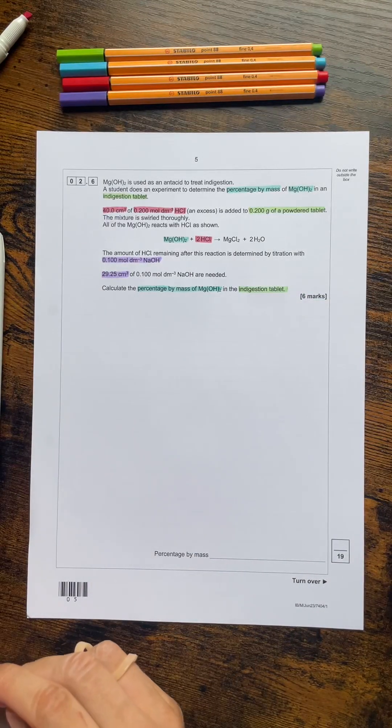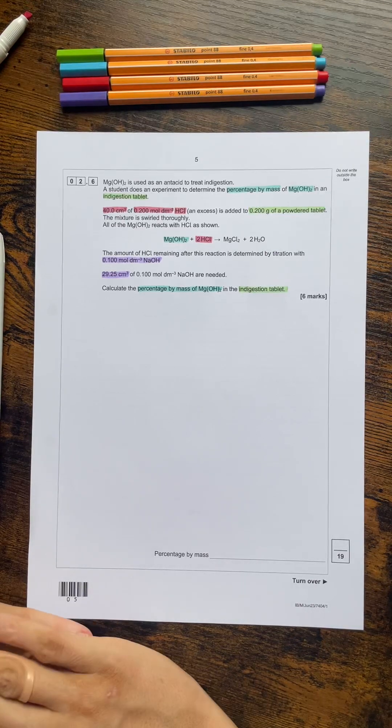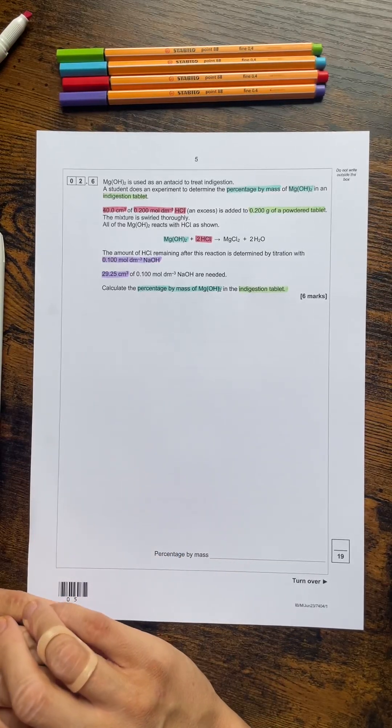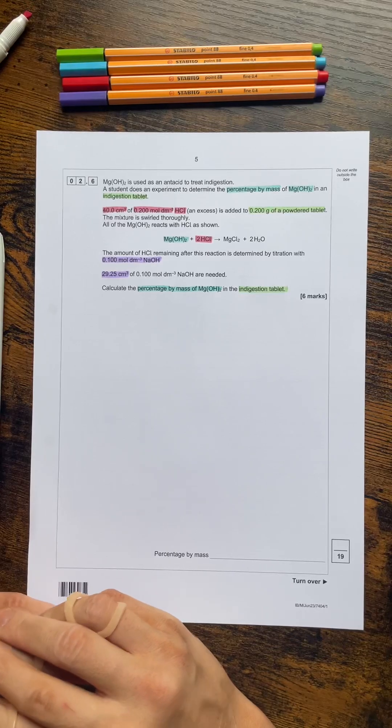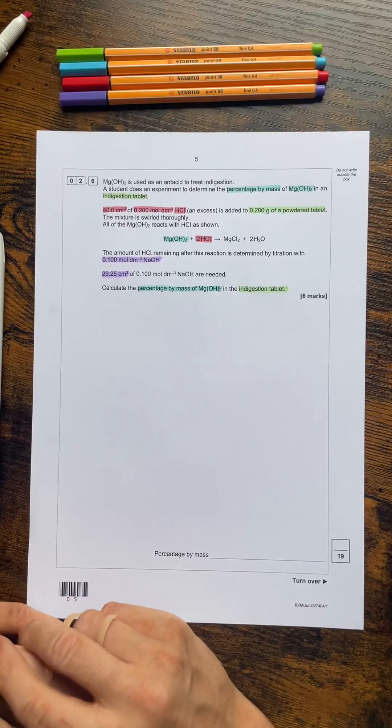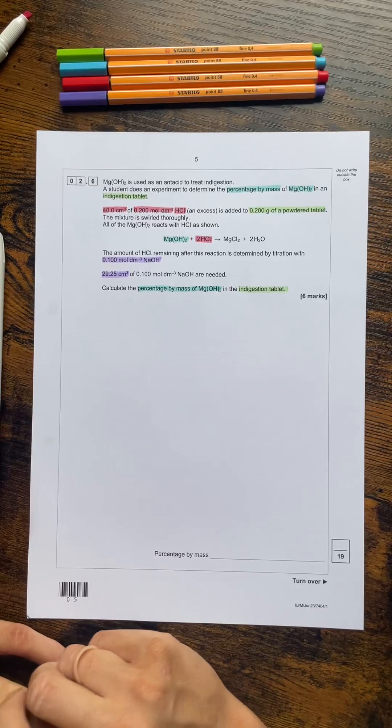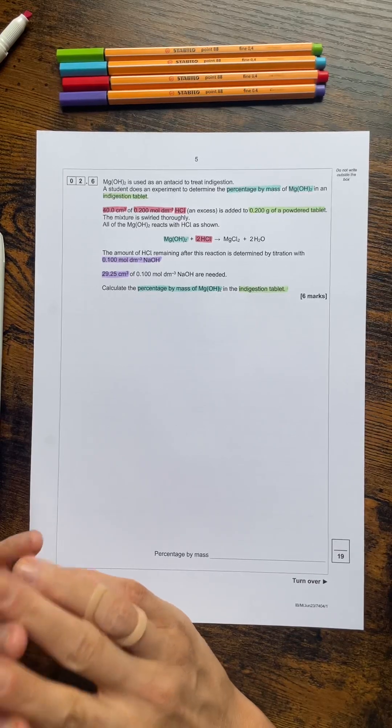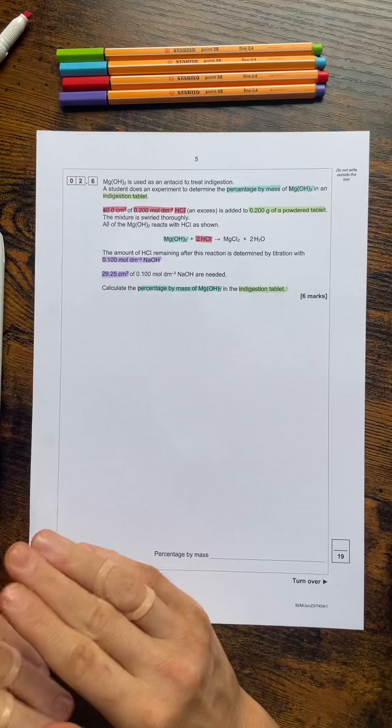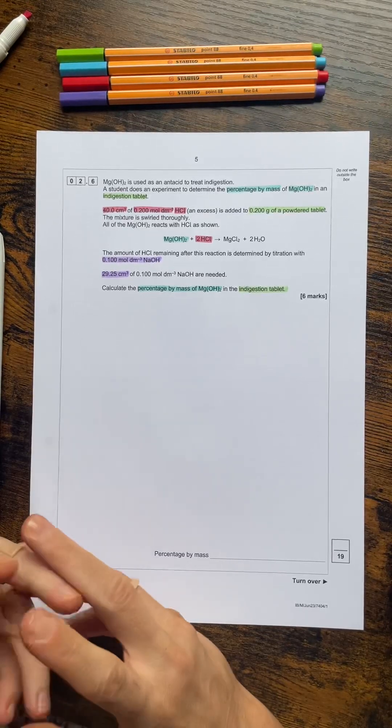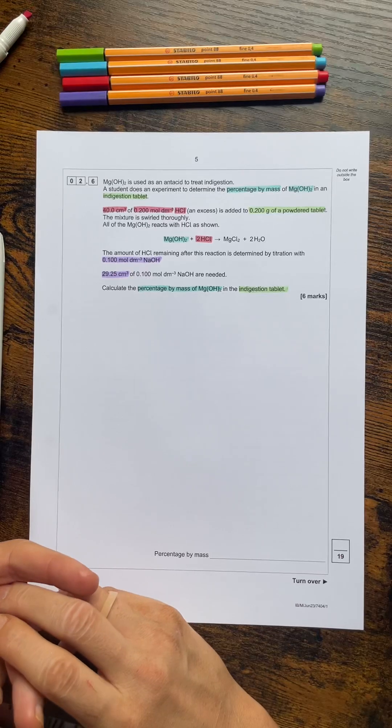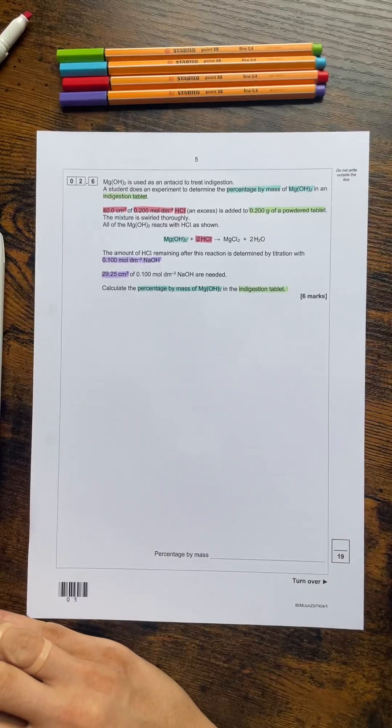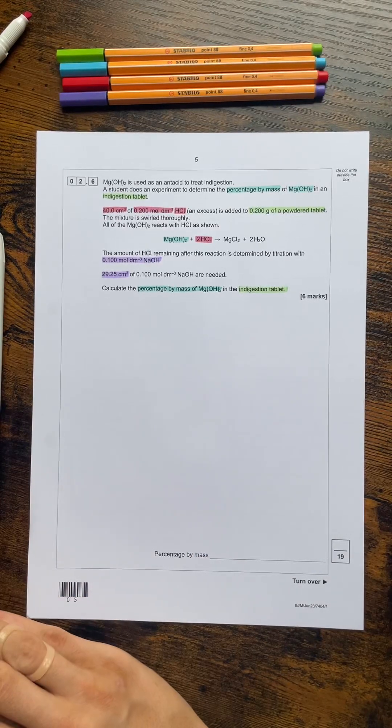So when we've attempted questions like this before I've always talked about the need to work backwards through the information and that is something that we can do again here. We can start by thinking about the second reaction with the amount of HCl that's remaining and how that reacts with the sodium hydroxide as a starting point. We can then calculate the moles of the HCl in the beginning. We can then work out the difference and carry on from there. However you might wish to calculate the initial moles of excess hydrochloric acid first and that would be completely okay. I'm going to stick to the working backward method because that is an approach that we'll need in lots of different types of calculation questions.